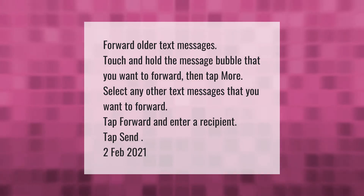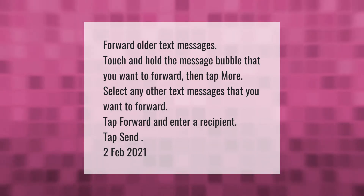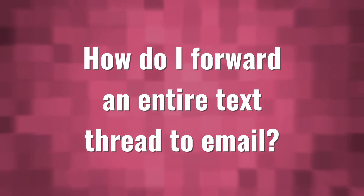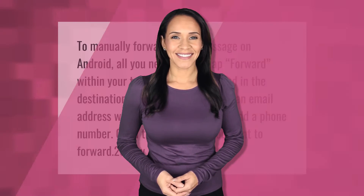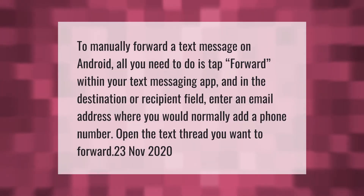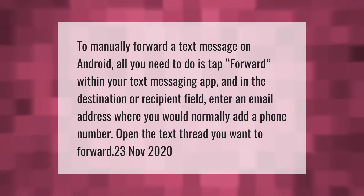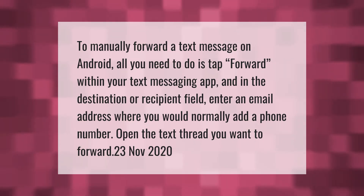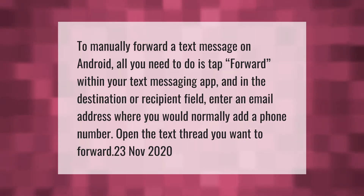To manually forward a text message on Android, all you need to do is tap Forward within your text messaging app. In the destination or recipient field, enter an email address where you would normally add a phone number.